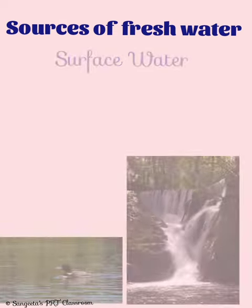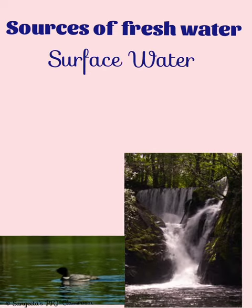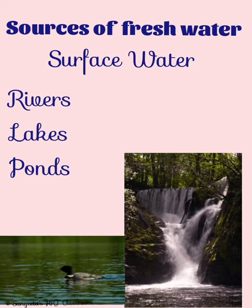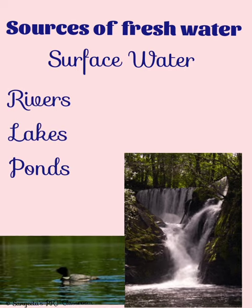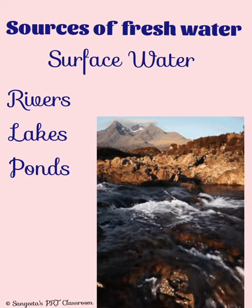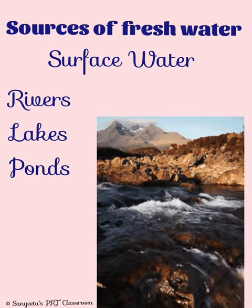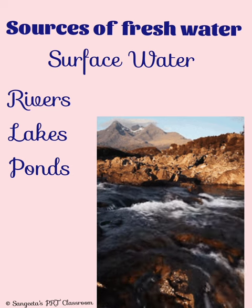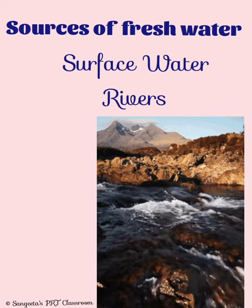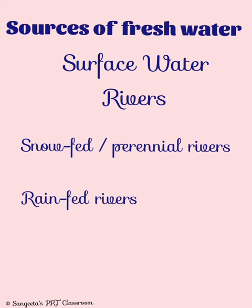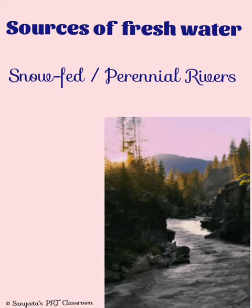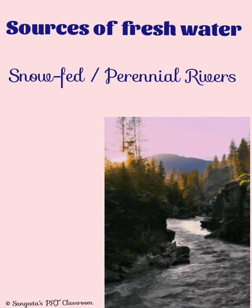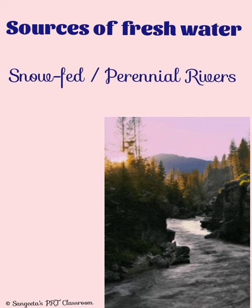Rivers, lakes and ponds are all sources of surface water. River is the largest source of fresh water that flows over the surface of earth. Rivers are of two types: snow-fed or perennial rivers, and rain-fed rivers. Snow-fed or perennial rivers are filled by streams formed by the melting of snow in glaciers, and they carry plenty of water throughout the year.